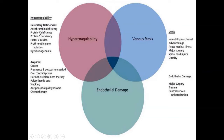In hereditary hypercoagulability, there is antithrombin deficiency such as antithrombin C deficiency, protein C deficiency, protein S deficiency, factor V Leiden — which is a mutation in factor V — prothrombin gene mutation, and dysfibrinogenemia.